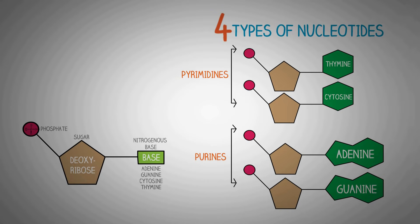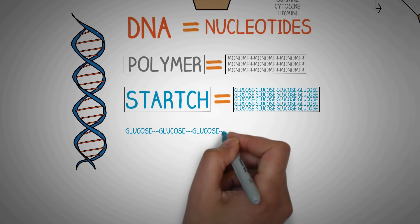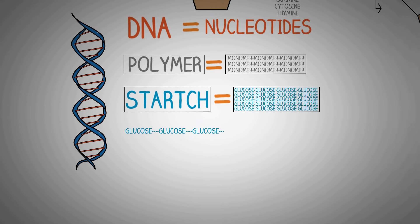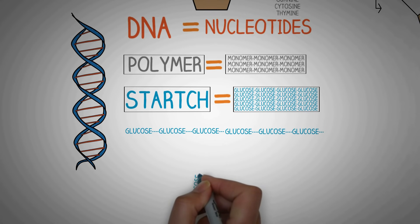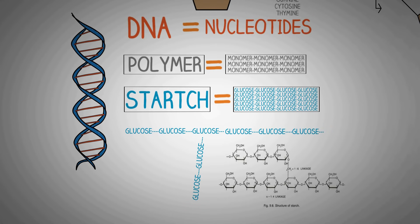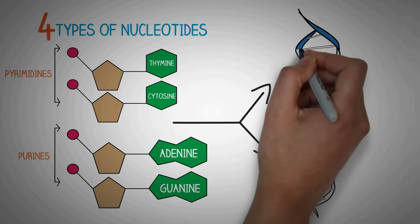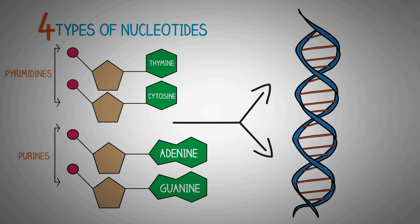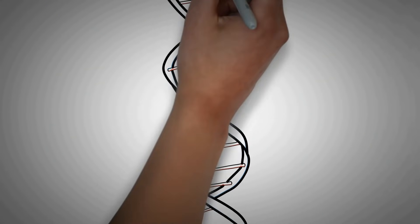In the case of starch, the structure is pretty simple — it only consists of long linear chains or branched chains of glucose joined together by glycosidic bonds. But in the case of DNA, the four types of nucleotides join together in a very complex way to form the double helix structure.